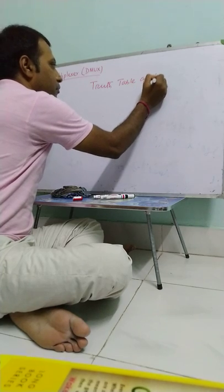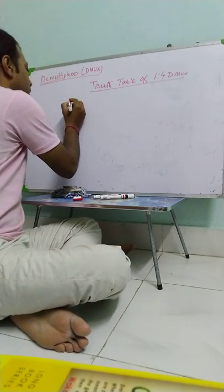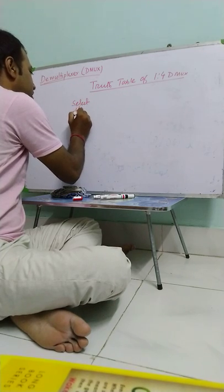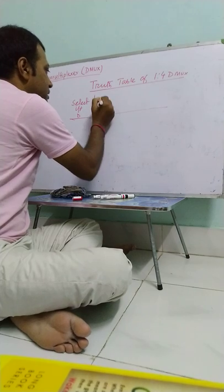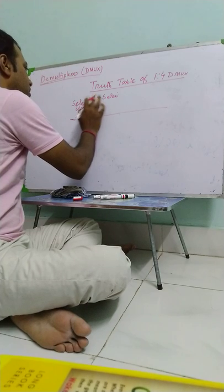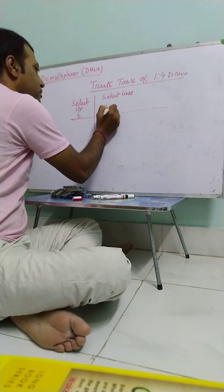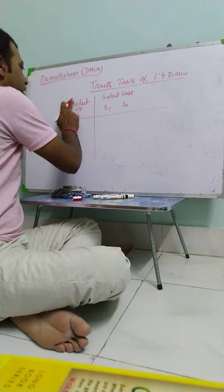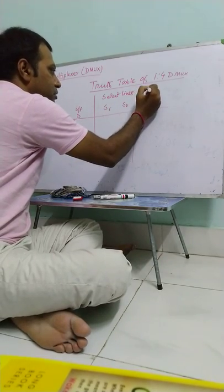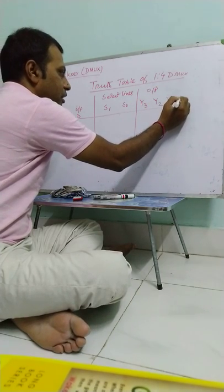So select input, that is D. Select lines, that is S1 and S0. And input D. And the outputs, Y3, Y2, Y1 and Y0.